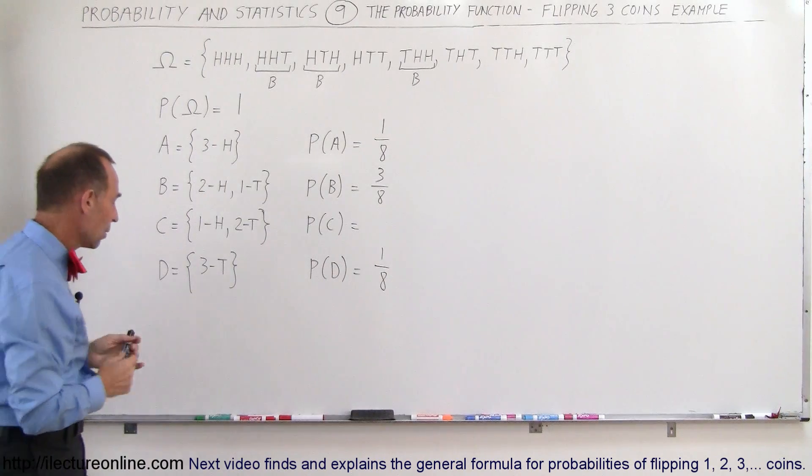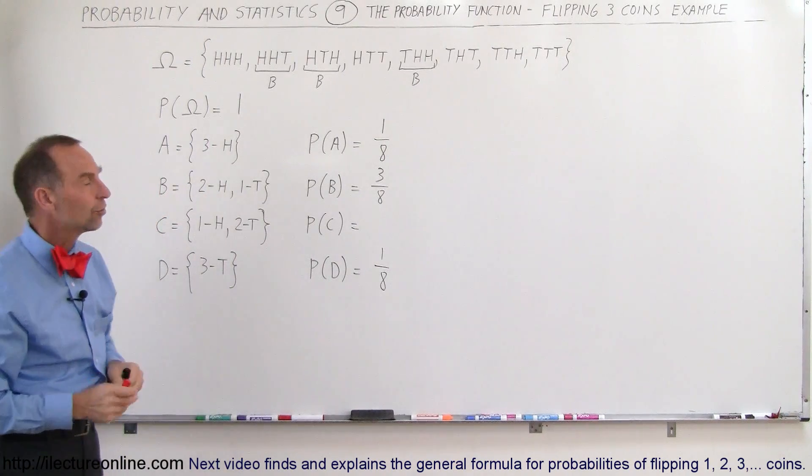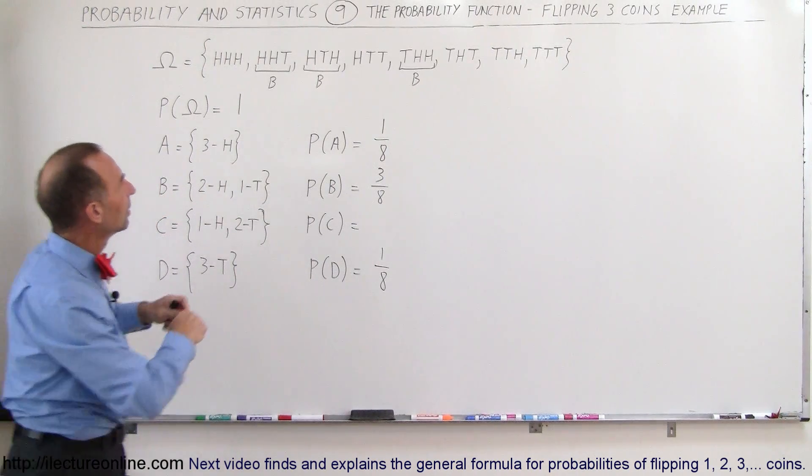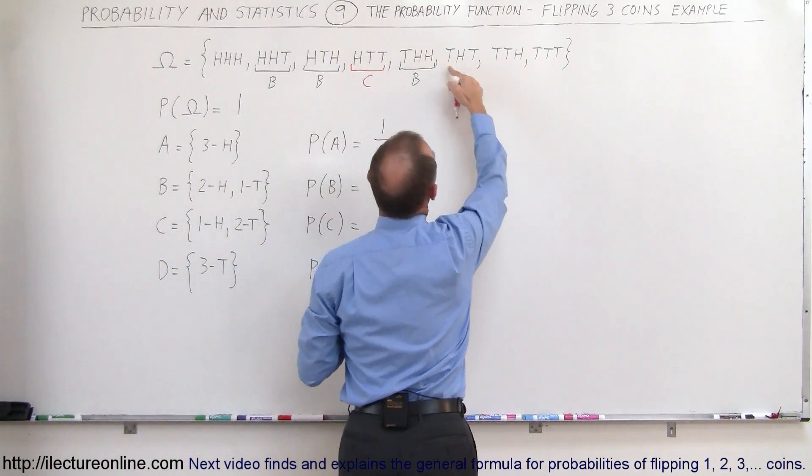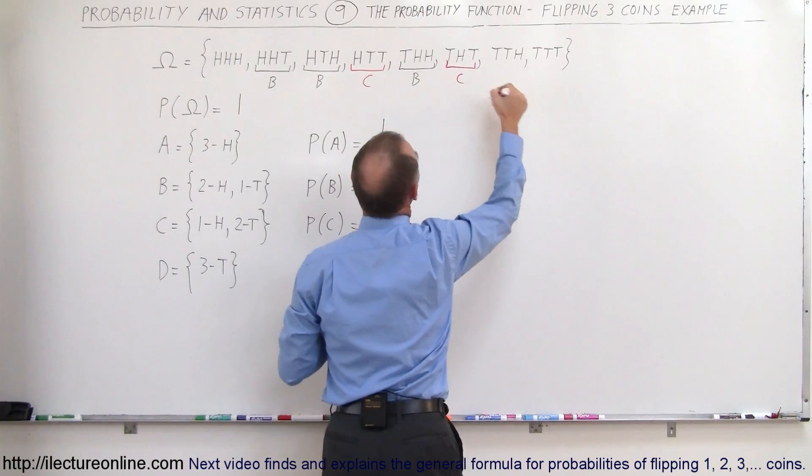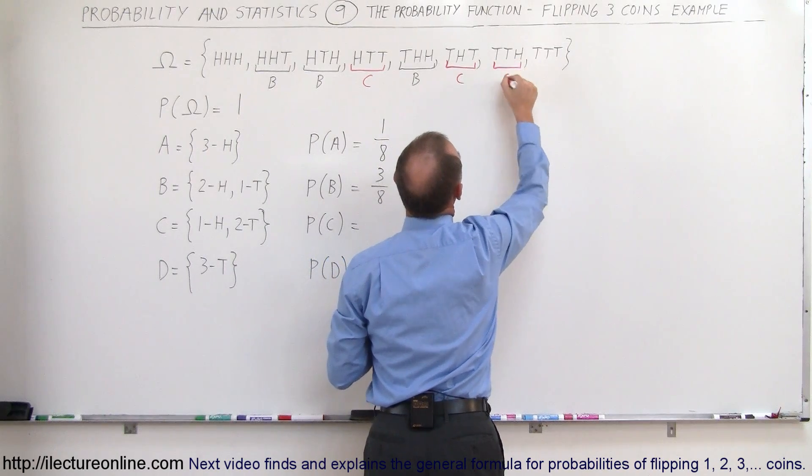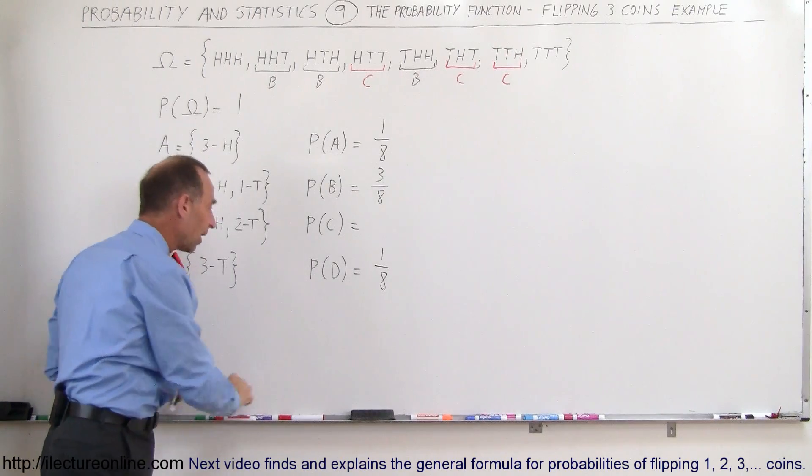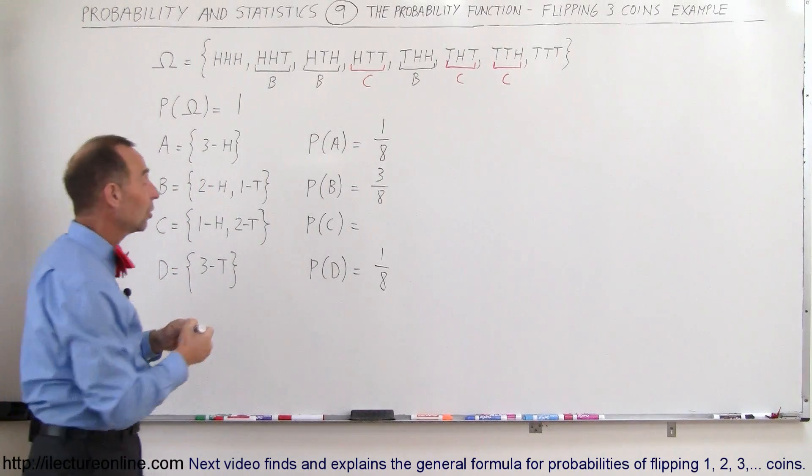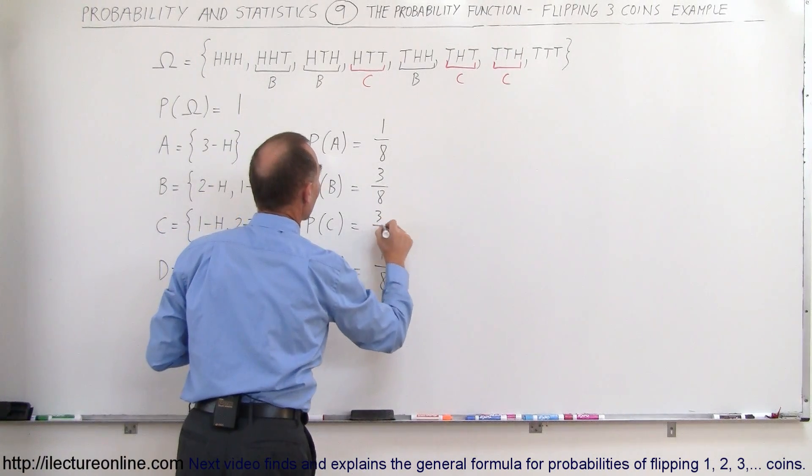What about C, one head and two tails? Well, let's see here. One head, two tails right here, that would be C. One head, two tails, C. One head, two tails, C. So there's three possibilities here as well. Three outcomes out of eight, so therefore the probability that C will occur is three out of eight.